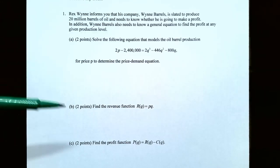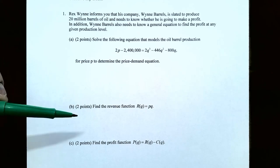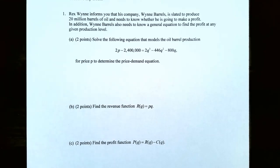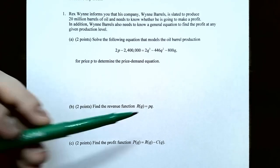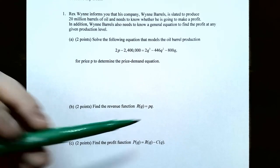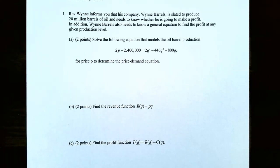In Part B, once we know the price-demand equation with P solved for, we can find the revenue function R(Q). Remember that revenue is defined as price times quantity. From Part A you'll have P expressed in terms of Q, so substituting that in gives you a function that depends only on Q — that's the revenue function for Wayne Barrels.